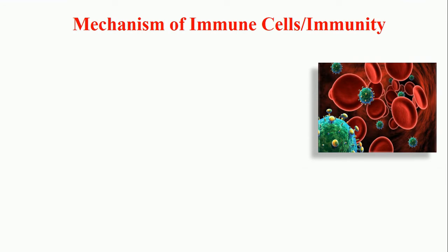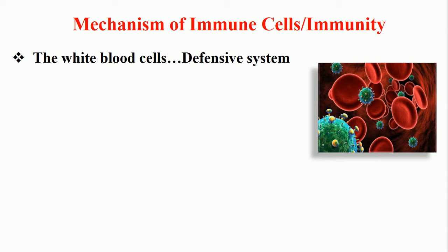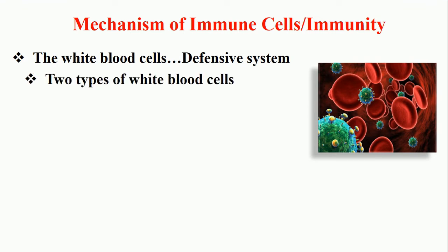There are special types of cells responsible for fighting against viruses, coronavirus, and any pathogen particles. This is the mechanism of immune cells — immunity. White blood cells are responsible for the defensive system, which is actually the immune system that works against any specific pathogens or foreign particles that enter the body. There are two types of white blood cells.